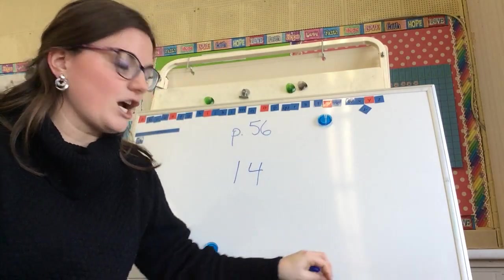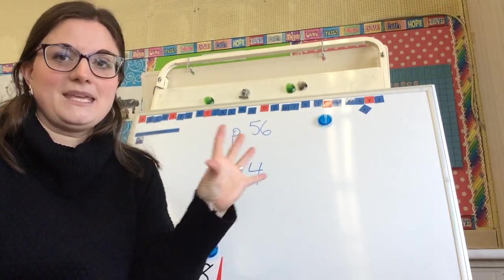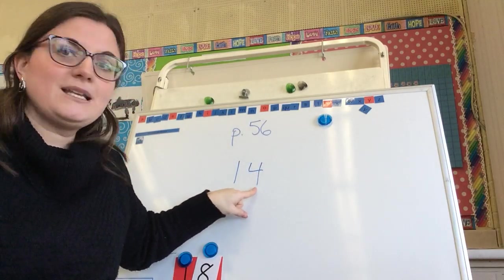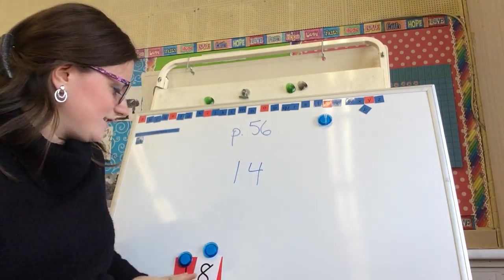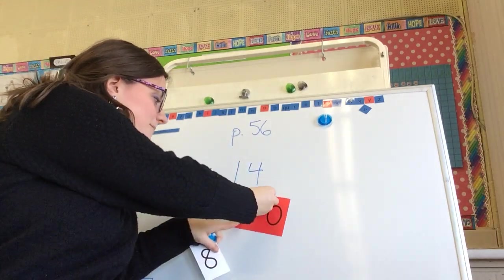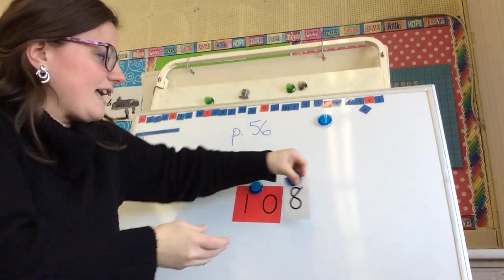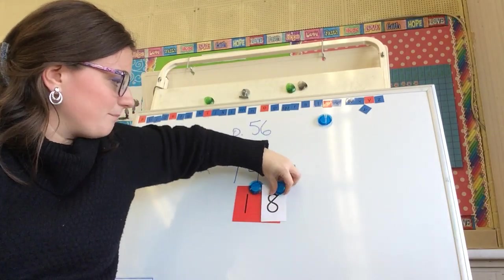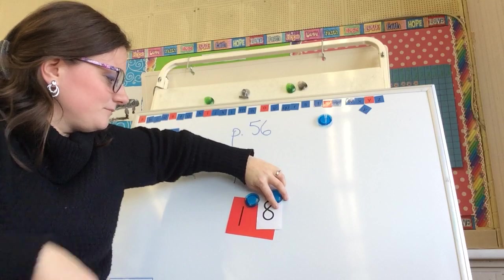So it comes in handy to make our group of 10 because then we know the group of 10 is the first number. And then how many beyond the group of 10? Just like our number here. Right? We have a group of 10. And then we had 8 others. And when we put them together, it makes the number 18.